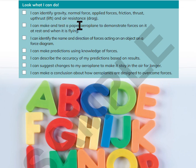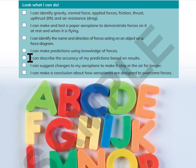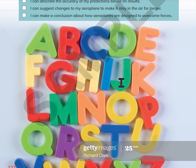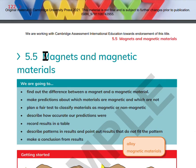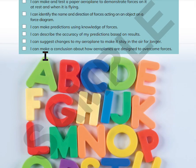I can make and test a paper airplane to demonstrate forces on it at rest and when it is flying. I can identify the name and direction of forces acting on an object on a force diagram. I can make predictions using knowledge of forces. I can describe the accuracy of my predictions based on results. I can suggest changes to my airplane to make it stay in the air for longer. I can make a conclusion about how airplanes are designed to overcome forces. See you next time when we are learning about lesson 5.5 about magnets. Thank you and goodbye!